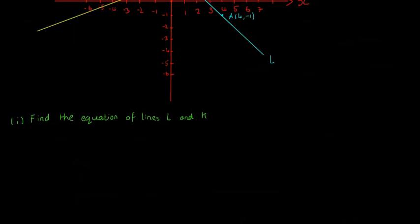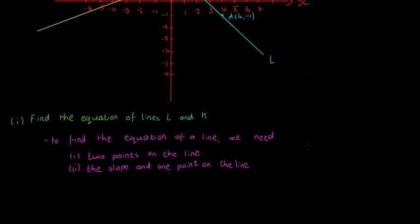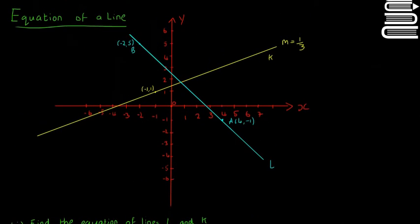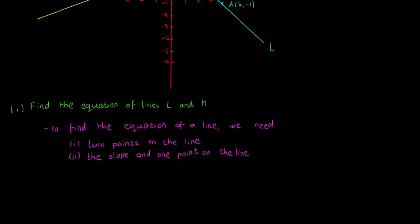To find the equation of a line, we need one of two things. We either need two points on the line, or else we need the slope and one point on the line. That's exactly what we have here. We have two points on the blue line, and we have the slope and one point on the yellow line. So we're going to see both methods. With either of these forms, we're going to have to use this formula: Y minus Y1 is equal to M by X minus X1. There's another formula that's in your formula book, so we'll get used to seeing it.